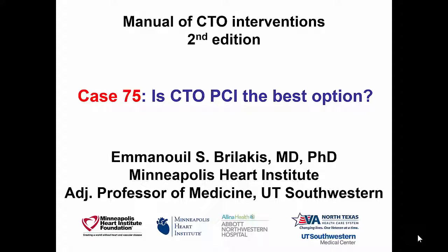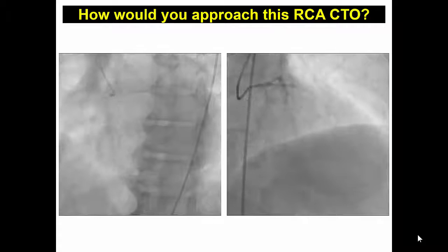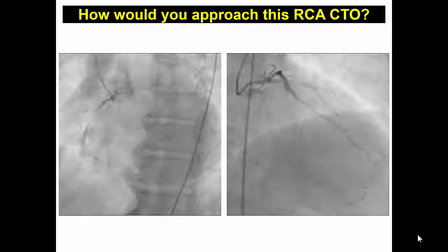Hi, this is Manos Berlakis presenting Case 75 for the second edition of the Manual of CTO Interventions. This is a case illustrating the difficulties in selecting the optimal treatment strategy for patients referred for CTO.